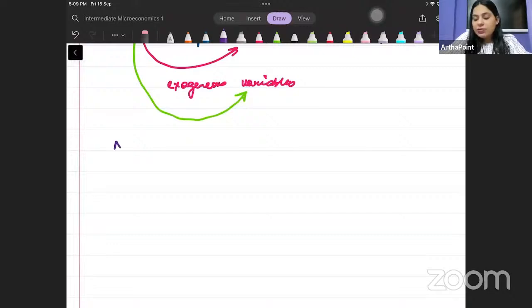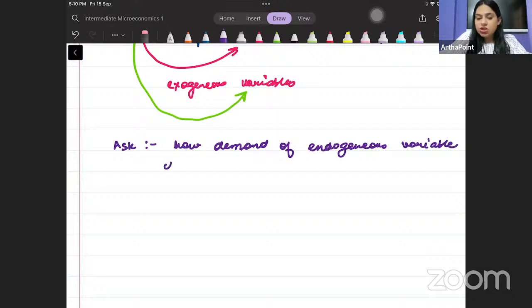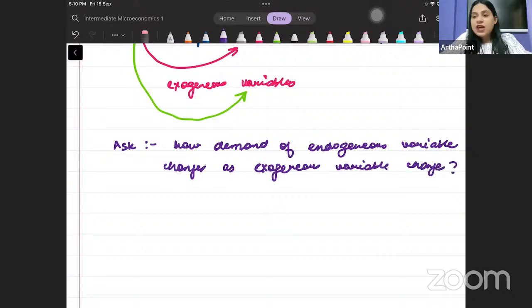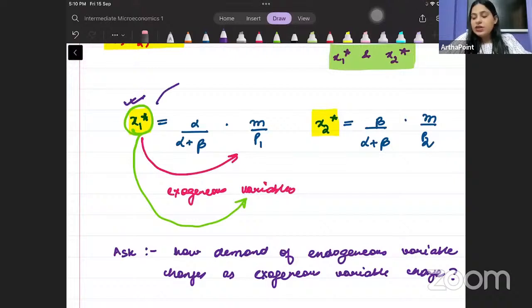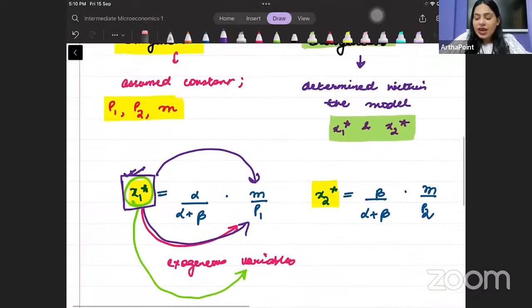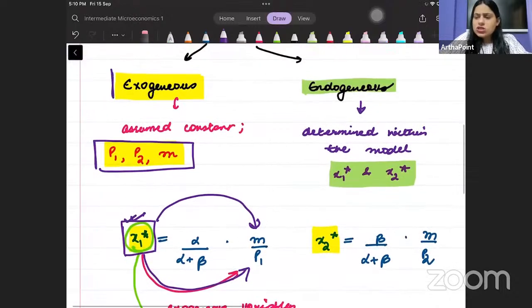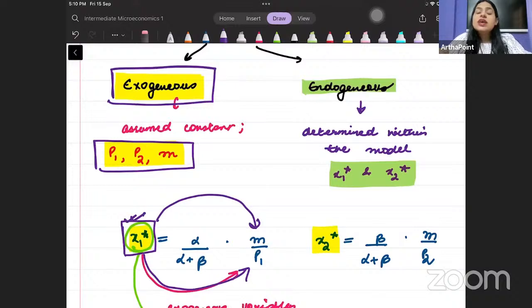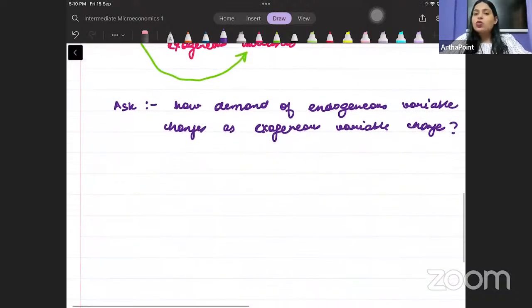Now we want to go ahead and ask an important question. How the demand of endogenous variable changes as exogenous variable changes? So Beta, we are asking how this x1 star will be affected when M changes? How this x1 star will be affected when P1 changes? These were M and P1, these were my exogenous variables, these were outside the model. But how these exogenous variables, they affect my endogenous variable, that is what I want to go ahead and ask today.